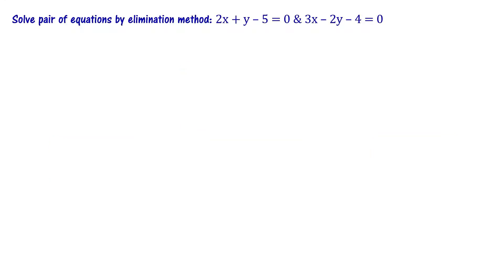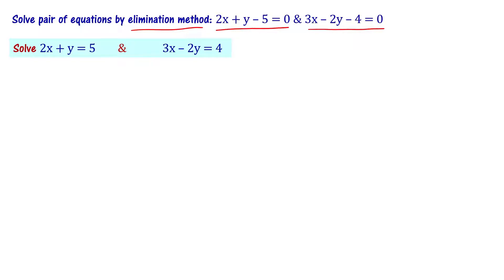Solve the pair of equations by elimination method: 2x plus y minus 5 equal to 0, and 3x minus 2y minus 4 equal to 0. We rearrange the equations as: 2x plus y equal to 5, and 3x minus 2y equal to 4.